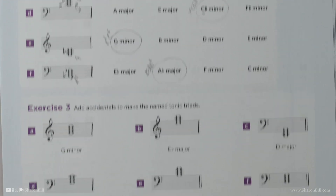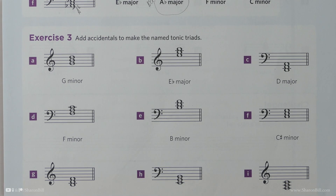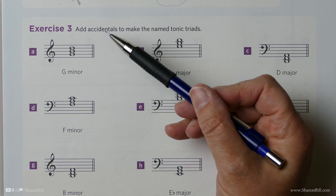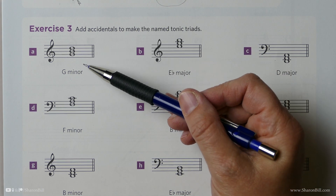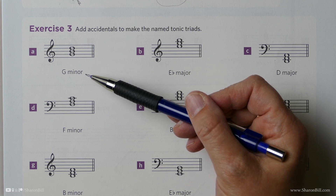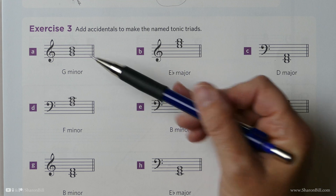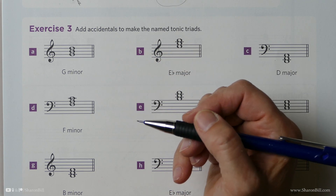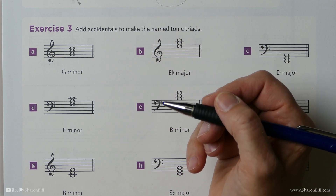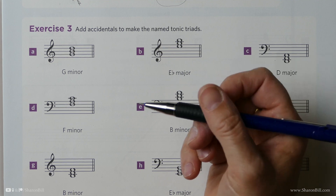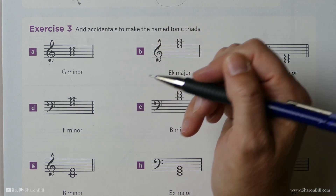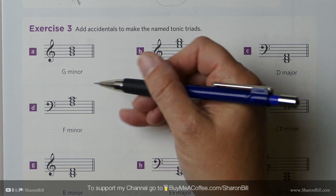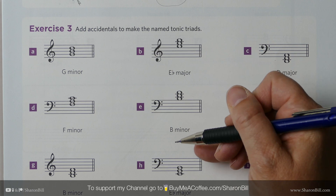In exercise 3, we have a similar thought process. However, the triads and the key are given to us — we've just got to make it correct by adding any necessary accidentals. We need to bear in mind what the key signature would be and then apply any part of that key signature to a note that would need to be changed. This is where, if you've done your list of scales and written out your major and minor key signatures and related keys, all of your thinking is done.